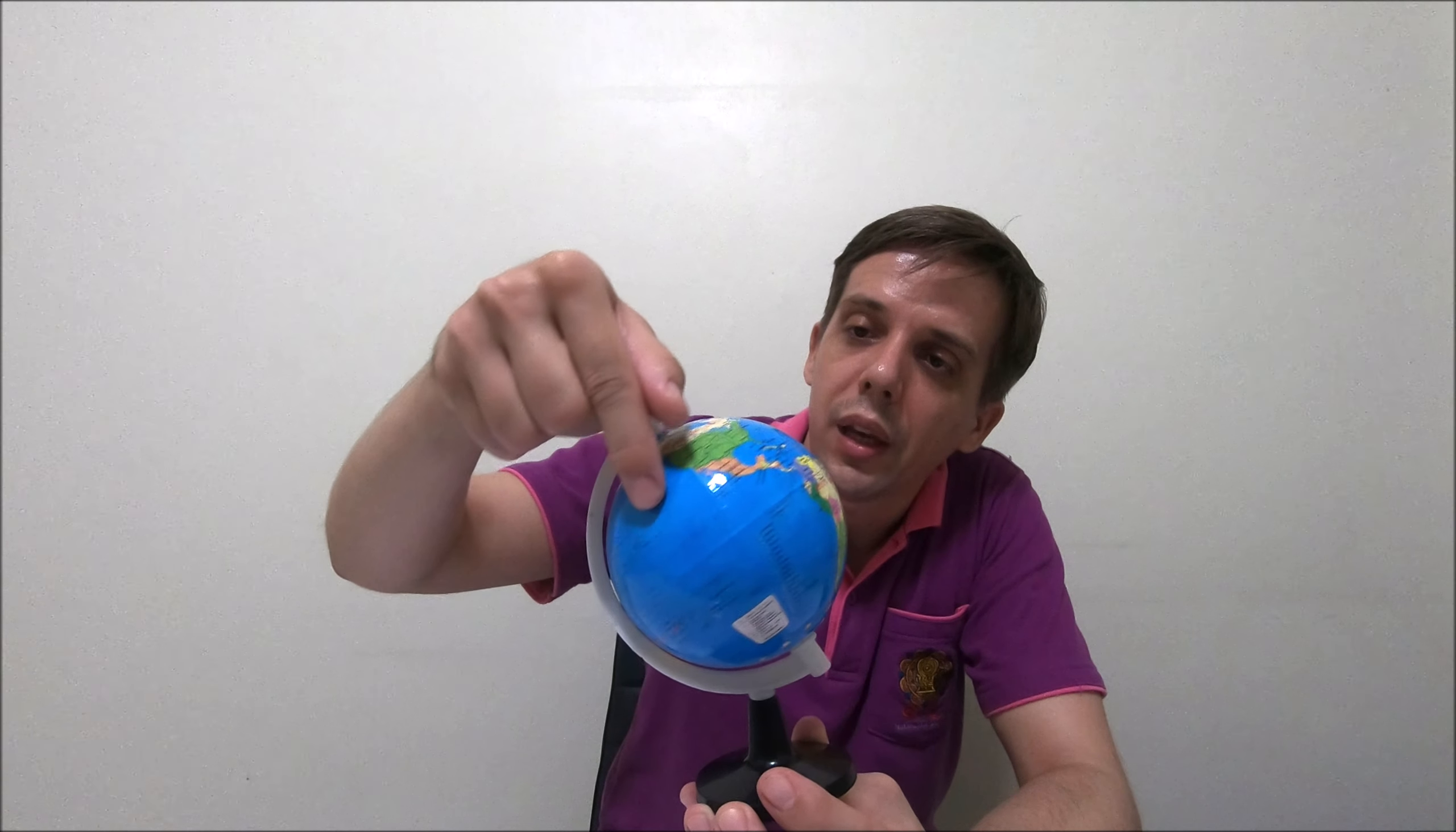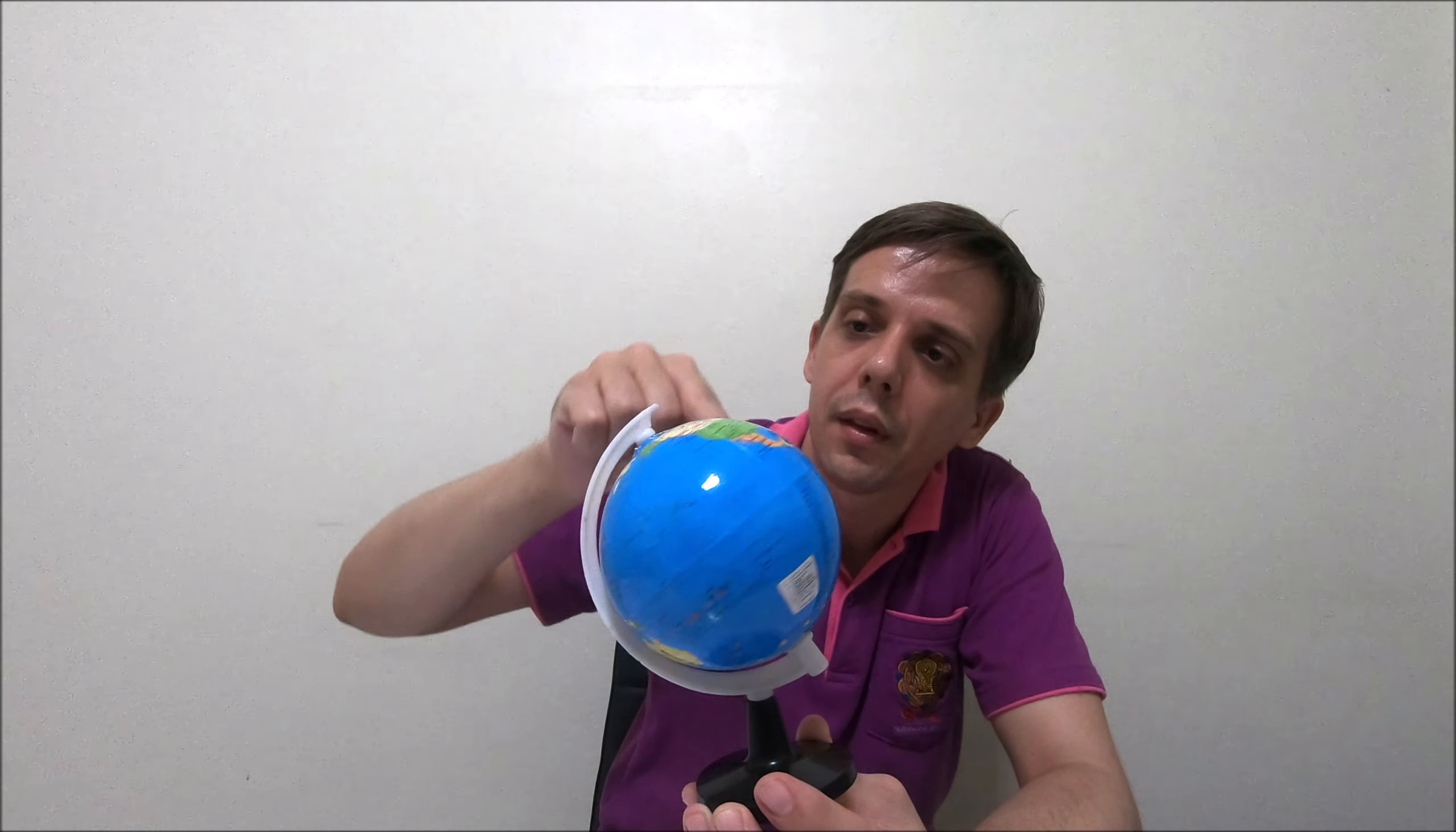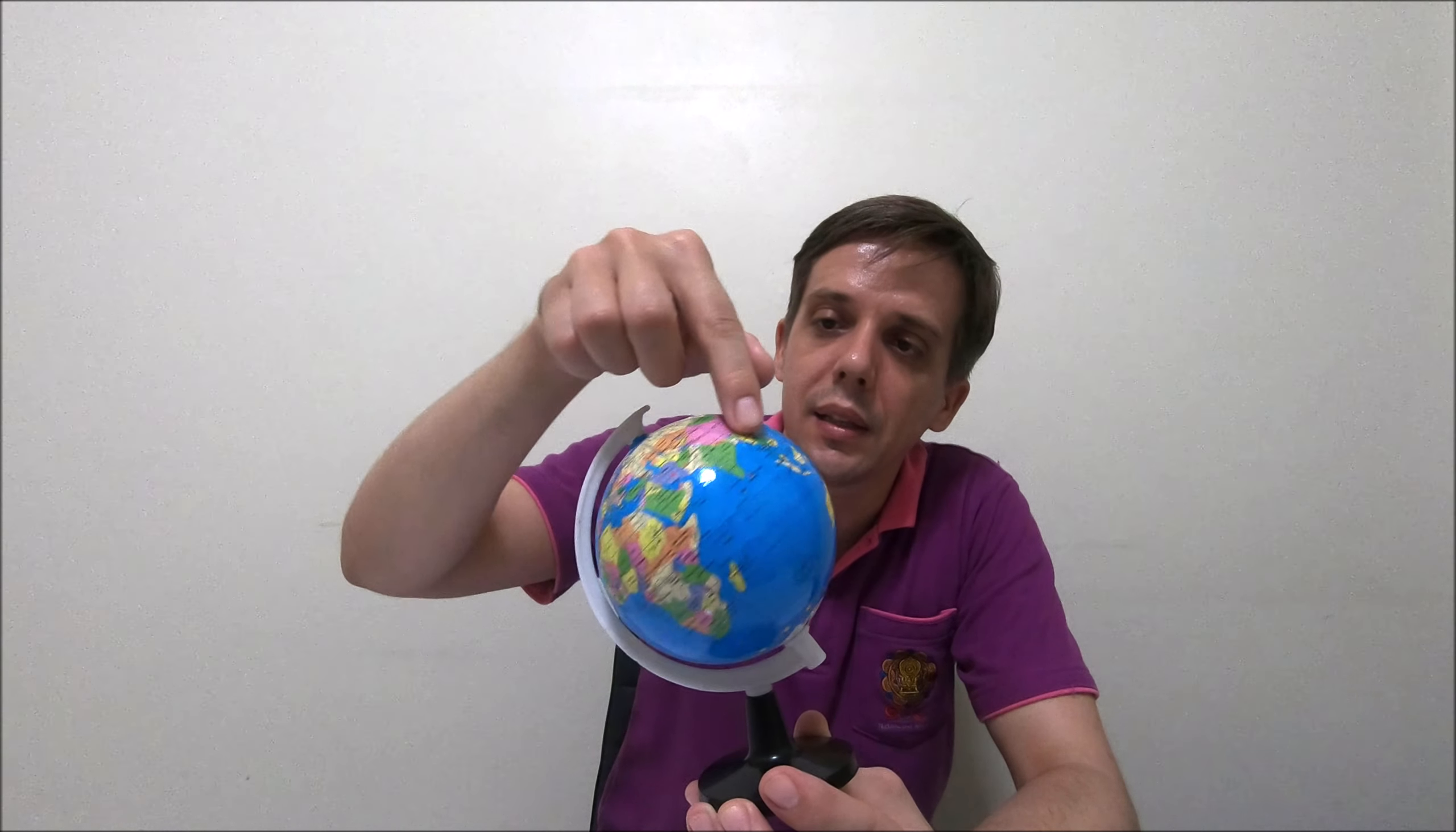And many of you probably also know that our Earth keeps rotating around its axis just like this. The axis is an imaginary line that goes through from the North Pole to the South Pole and our Earth keeps rotating around this axis every day, all day long.